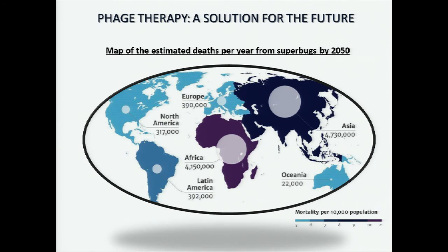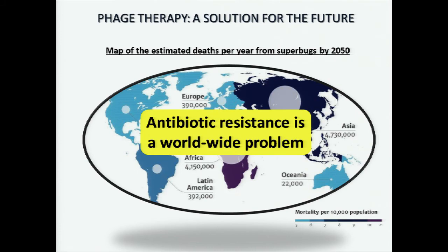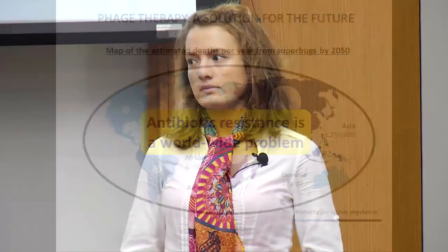Antibiotic resistance is a really, really important problem that affects us worldwide. This map of the world shows how many people are expected to die every single year because of a superbug infection. By the year 2050, it is expected that more than half a million people will have died because of superbugs. Antibiotic resistance is a worldwide problem — the time to develop phage therapy is now.